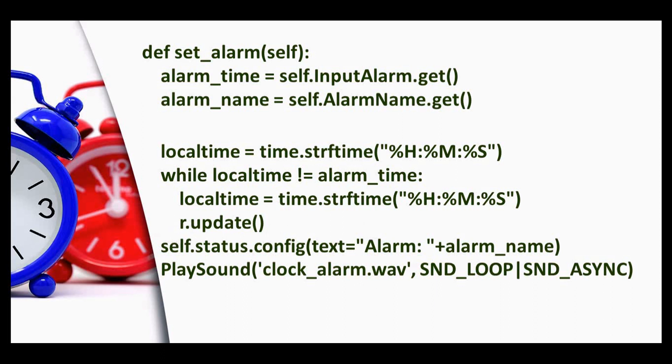This will be updating the window whenever an event occurs. It is used to show the updated screen; it reflects whenever the event occurs. After this we are updating the status label - that is, initially the text is empty. Now the text is made as Alarm and then the alarm name which the user has entered.